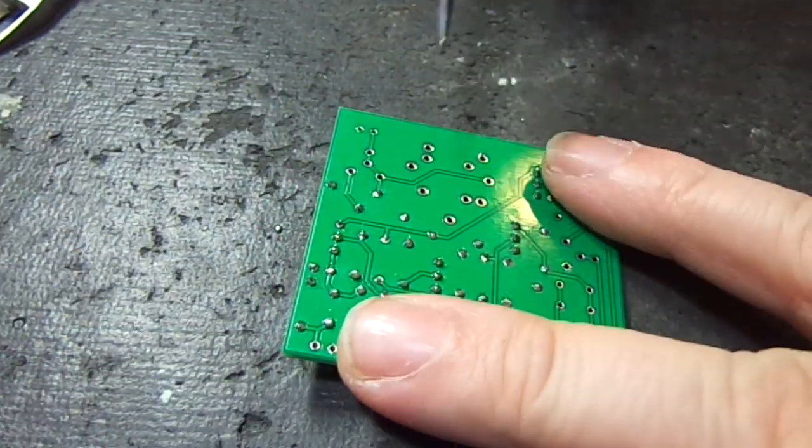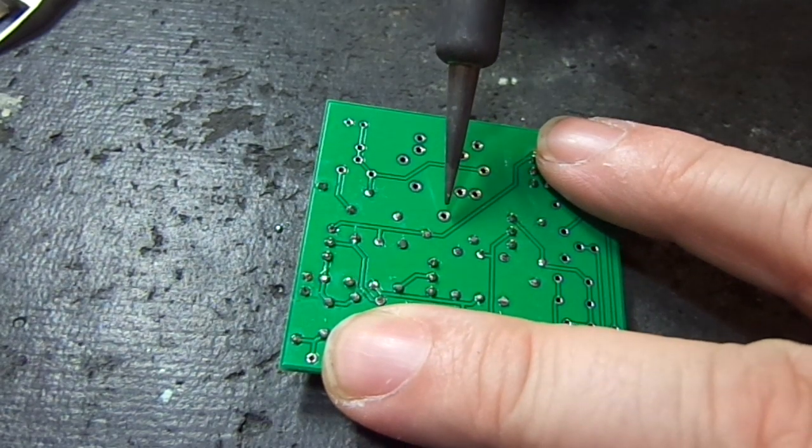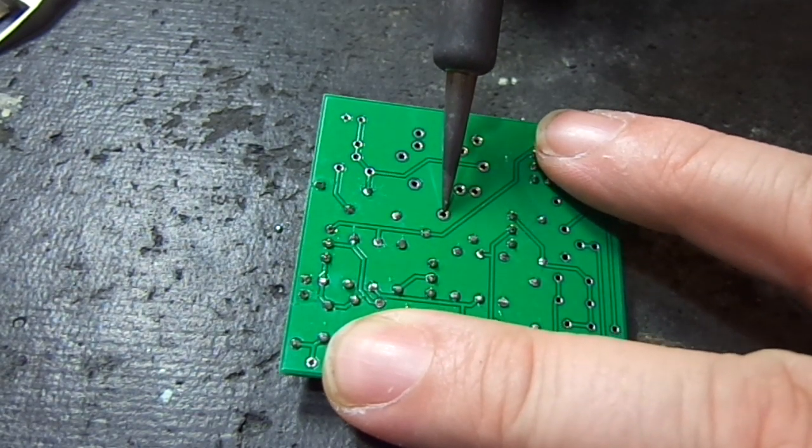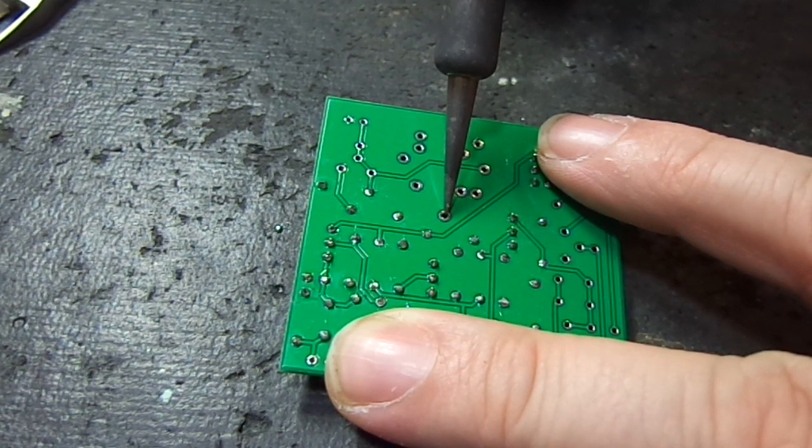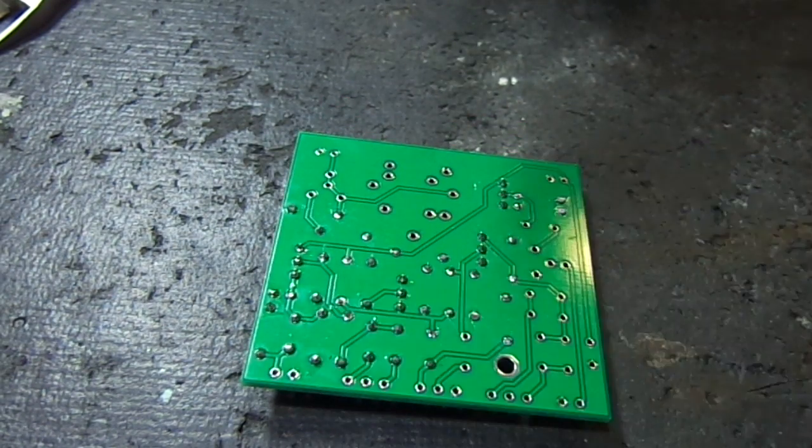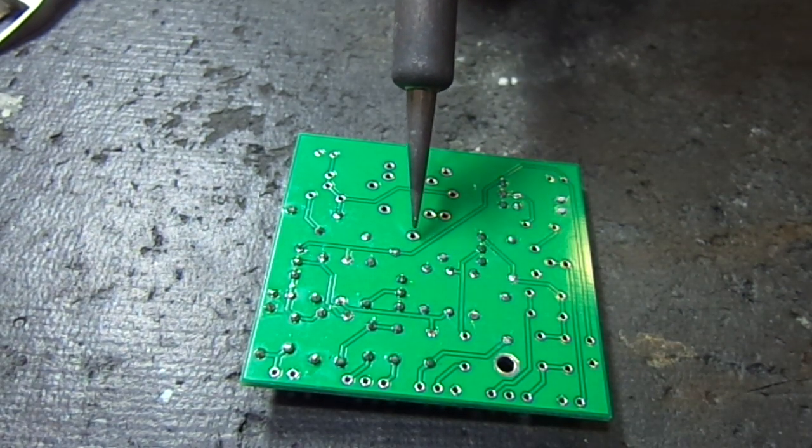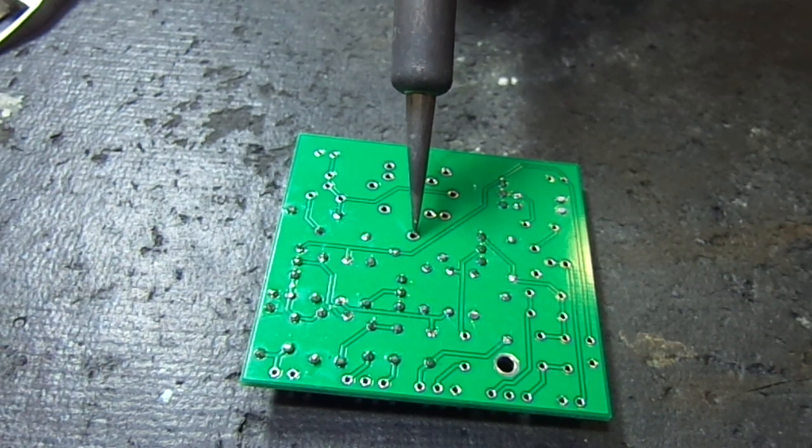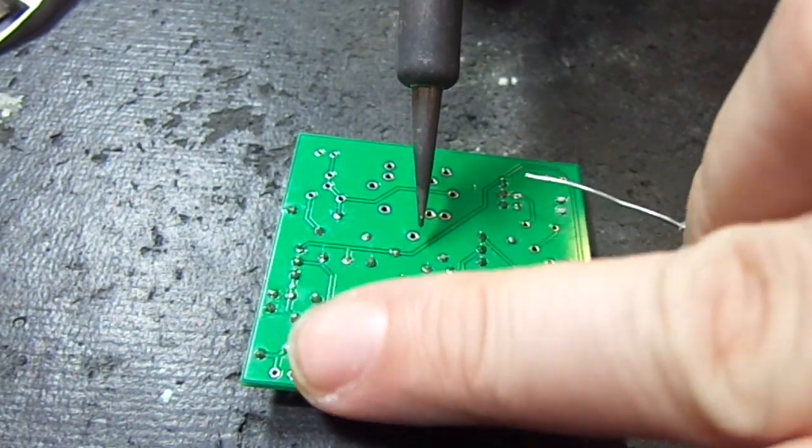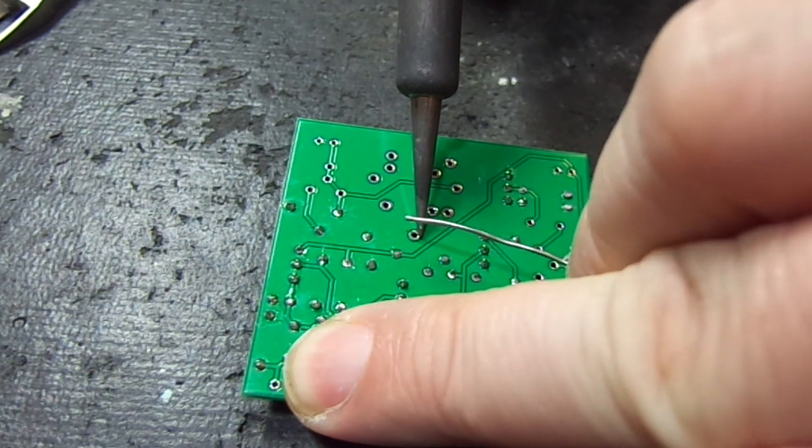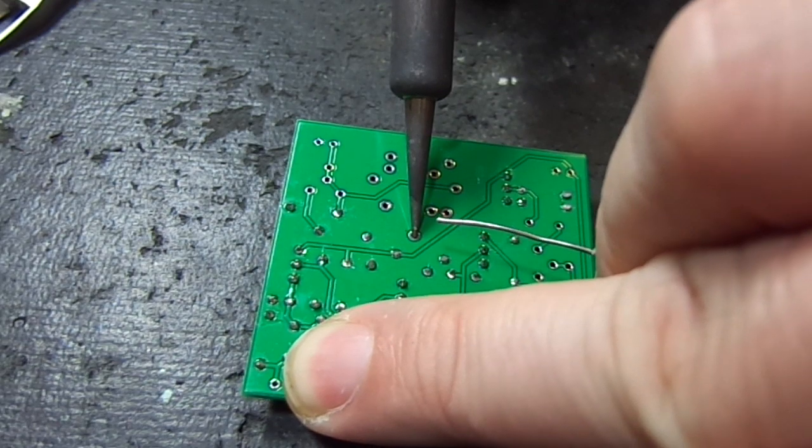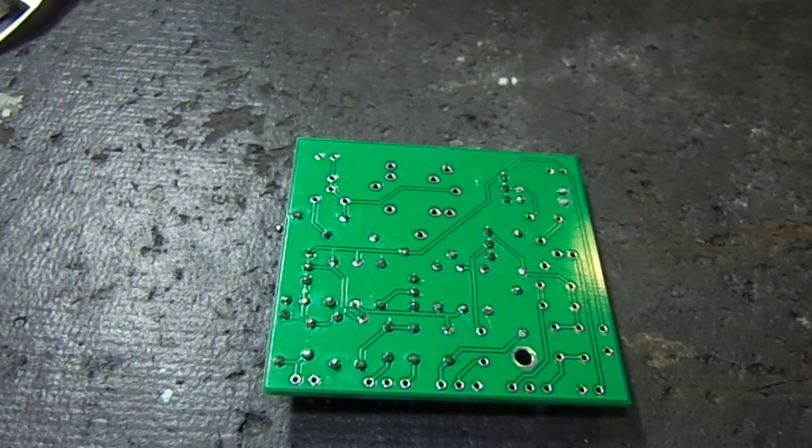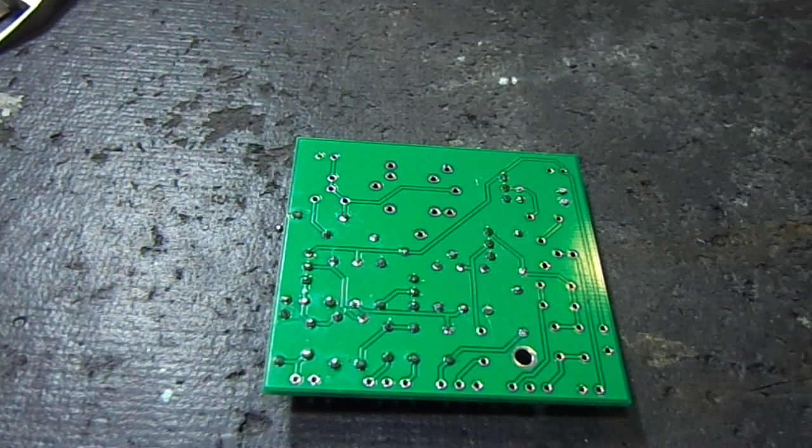When you go ahead and solder, you place your tip on the pad, also touching the lead at the same time. You wait and you heat the pad and the lead at the same time for maybe to a count of 8 or 10. Then apply your solder to the pad and the lead, not the solder tip, because you don't want to burn the flux away. Those are the most important things to get you started in the right direction.